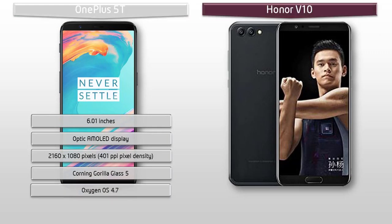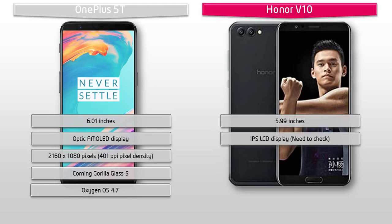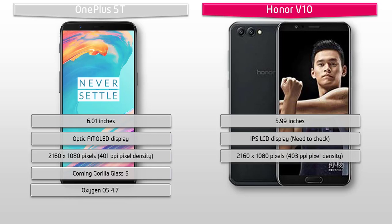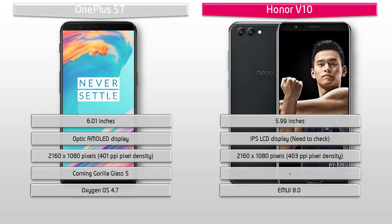Whereas the Honor V10 is also a 6-inch device with an IPS LCD display — and while it is not yet confirmed — it is having a resolution of 2160 by 1080 pixels and 403 ppi pixel density. Huawei has also included EMUI 8.0 in the Honor V10.